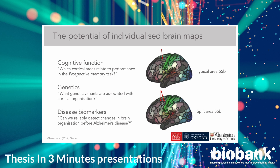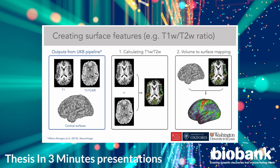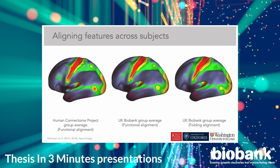Although work is still ongoing, I want to briefly share the results to date. The first step was to create functional surface features using the cortical surfaces and outputs from the UK Biobank imaging pipeline. Next, we optimized the alignment of functional features across subjects — critical to defining cortical regions in the multimodal atlas. This functional alignment approach is compared to alignment by cortical folding. Despite differences in imaging protocols, the Group Average UK Biobank myelin map driven by functional alignment closely resembles the Group Average Human Connectome myelin map, with sharp boundaries of the middle temporal complex and the lateral interparietal area, which are poorly defined or absent in the folding-based map.